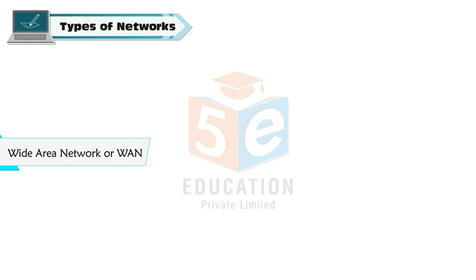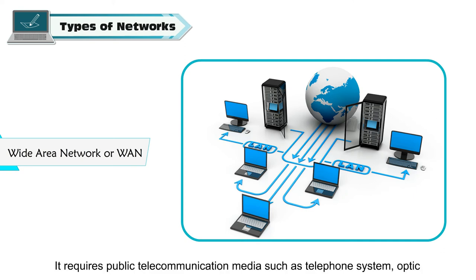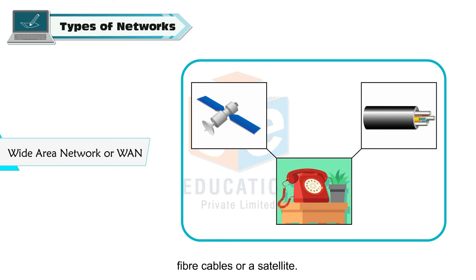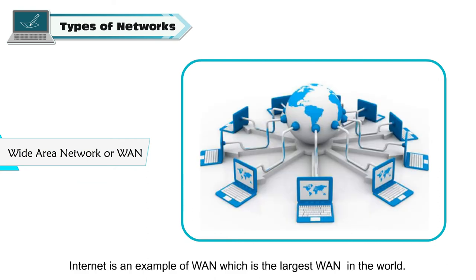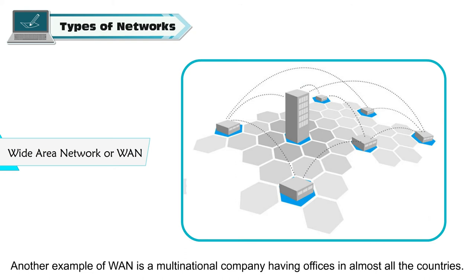Wide Area Network or WAN spans over a large geographical area, often a country or a continent. It requires public telecommunication media such as a telephone system, optic fibre cables, or a satellite. The Internet is an example of a WAN and is the largest WAN in the world. Another example of a WAN is a multinational company having offices in almost all countries.